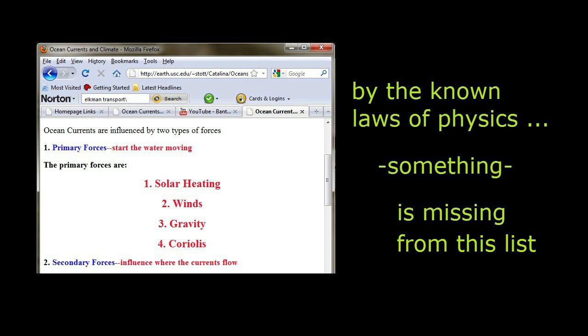The causes of ocean currents like the Gulf Stream are listed as solar, wind, gravity, and Coriolis.